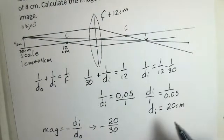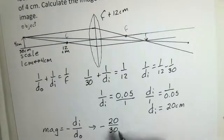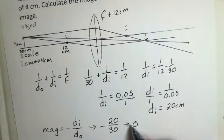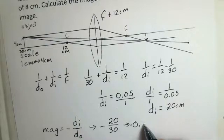I have to have the same units for both of these, centimeters divided by centimeters. Doing that division, I get a minus sign, 0.667.